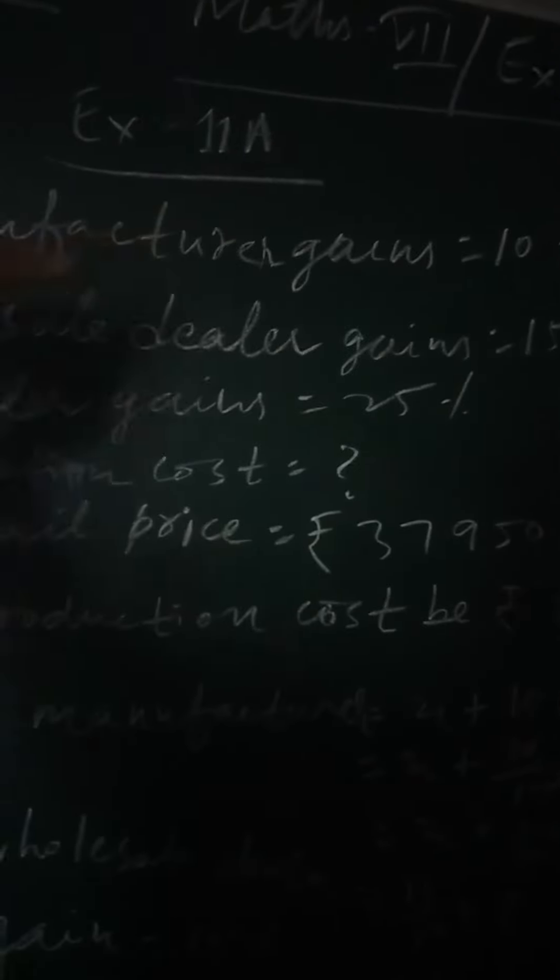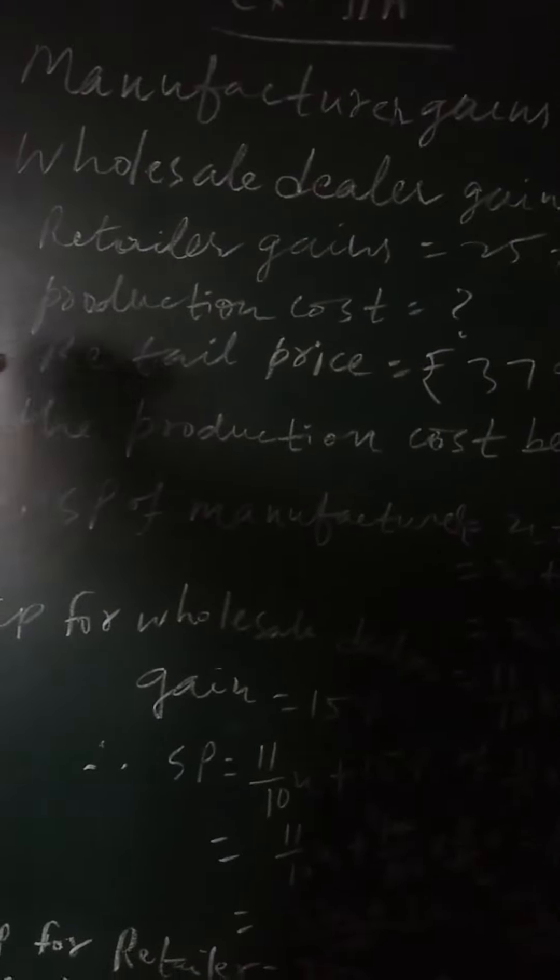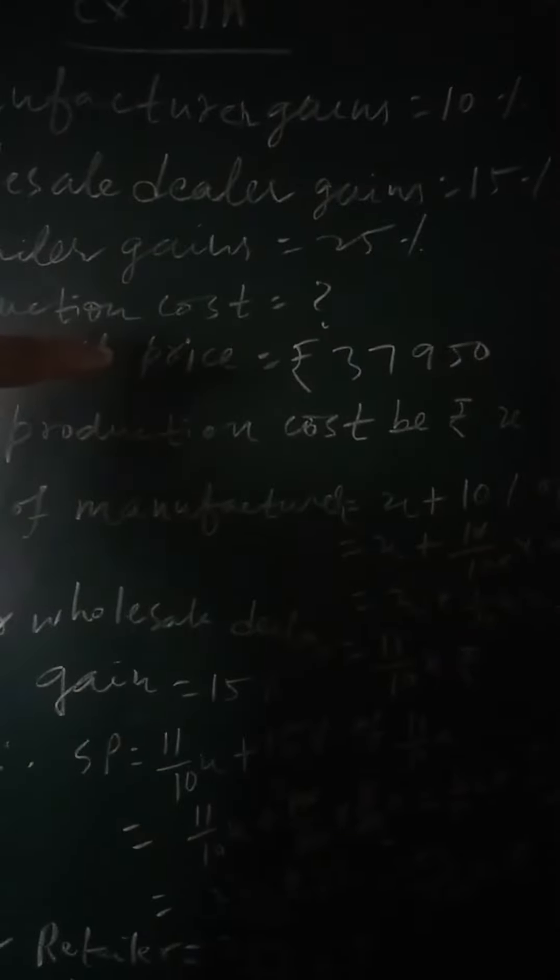Given that manufacturer gains 10%, wholesale dealer gains 15%, retailer gains 25%, if the retail price is rupee 37,950, what will be the production cost? To solve it, let the production cost be rupee X.